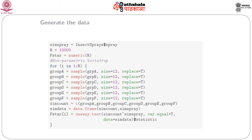For the non-parametric bootstrap, we define quantities GRPA to GRPF as the group values subtracted from their group mean. We take samples of size 12 with replacement from each group and do this 10,000 times. In the loop, 'group_A = sample(GRPA, size=12, replace=TRUE)' and similarly for all 6 groups. We create a simulated dataset 'sim_data' and run the same one-way test, storing the F statistic in F_star.